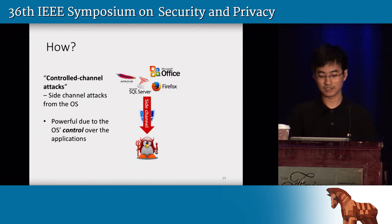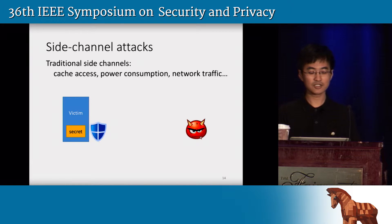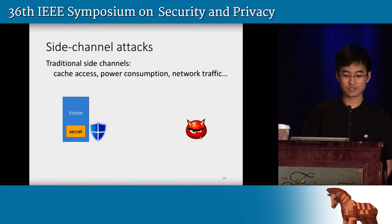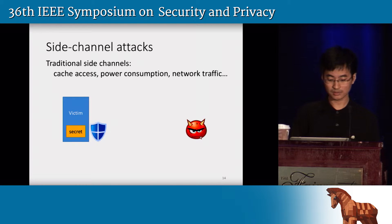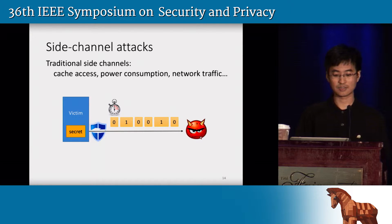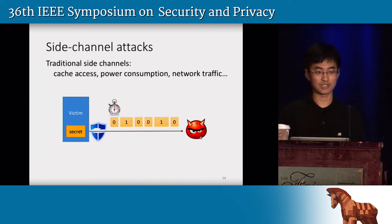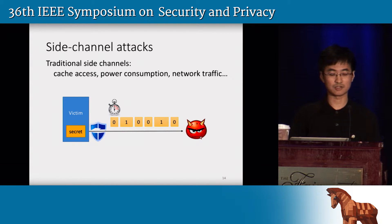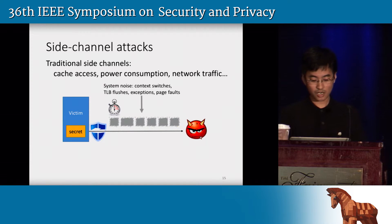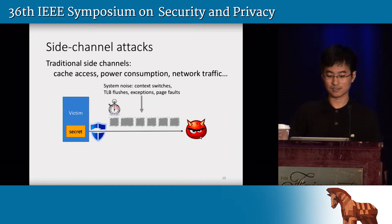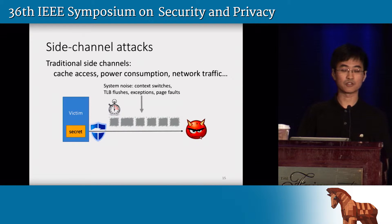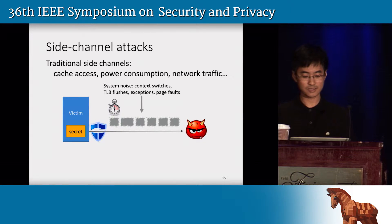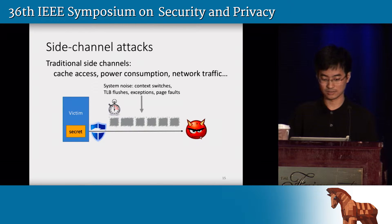We show it's more powerful than traditional side channel attacks where the attacker is some unprivileged process. In a traditional side channel setting, the victim has some secrets protected and the attacker doesn't have direct access to them. But the attacker might leverage some side effects made by the victim, such as the timing of cache accesses, power consumption, or network traffic, in order to infer some knowledge about the secret. However, a common drawback of these traditional attacks is that they're subject to severe system noises like context switches, TLB flushes, exceptions, and page faults. As a result, the attacker usually gets a very noisy result.